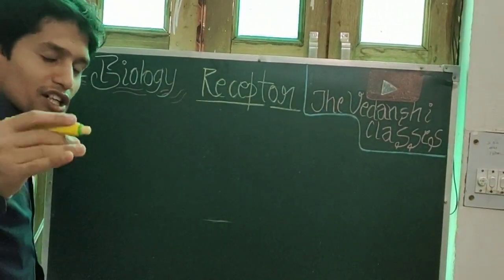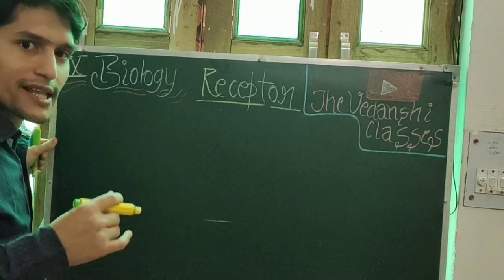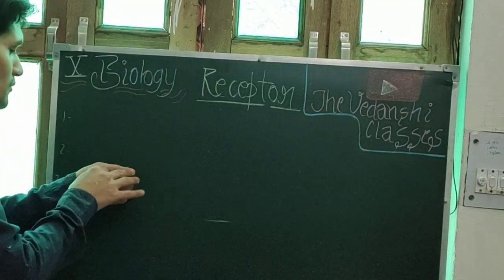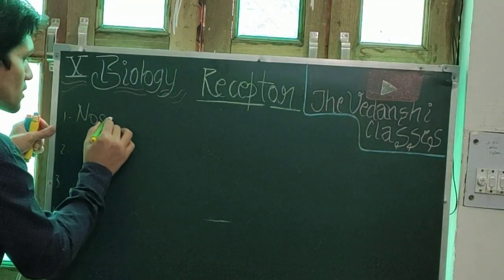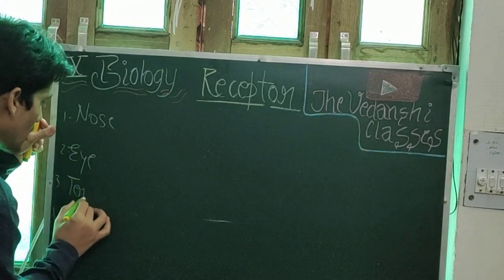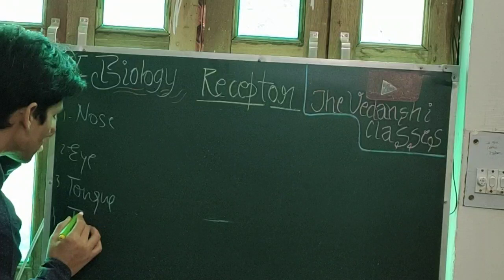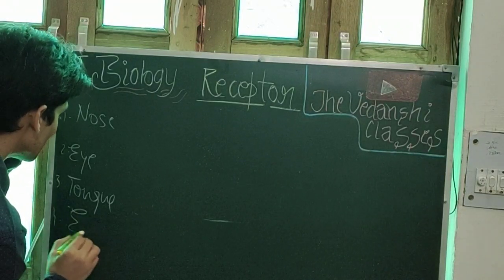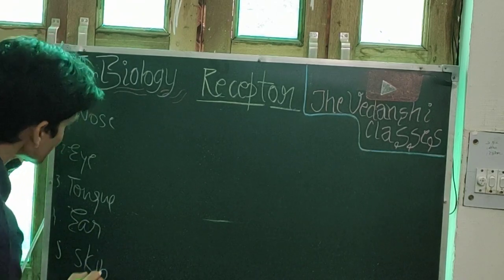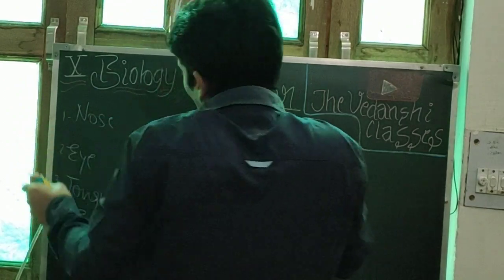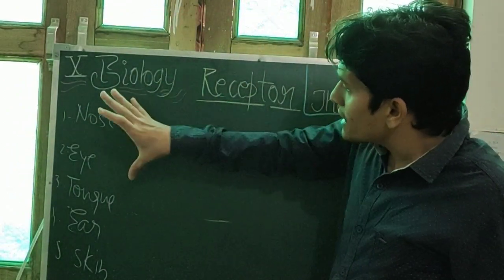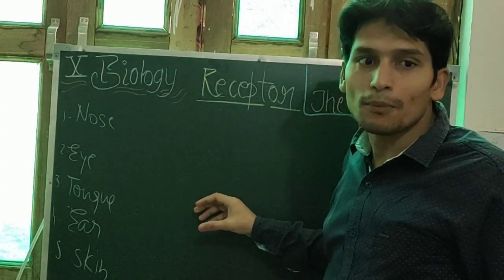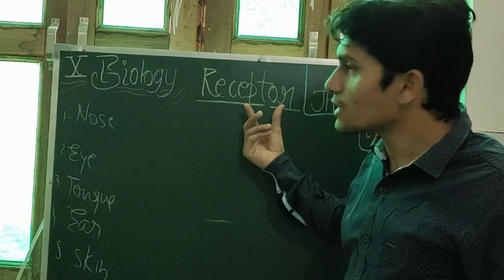In lower classes you studied the sense organs. There are five sense organs present in our body: nose, eye, tongue, ear, and skin. From these sense organs, stimuli are received by certain specialized cells called receptors.